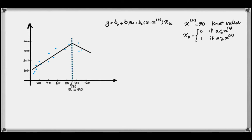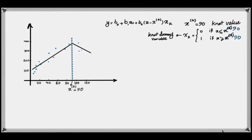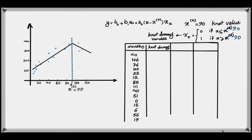Another variable we need is the dummy knot — a binary flag variable that equals one if x is greater than the knot value, and zero otherwise. To run the regression model we need to create a new column representing this part of the equation. In the Reynolds dataset we have months since employment and amount of sales. I show only x here because my intention is to create this part of the regression. First we generate the knot dummy, flagging everything greater than 90 as one and less than 90 as zero.